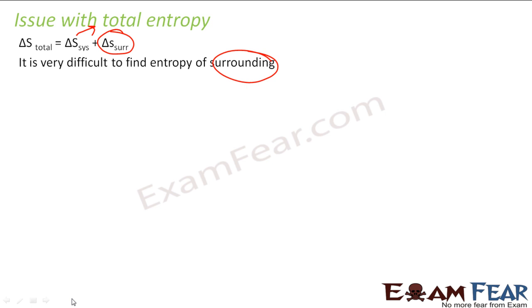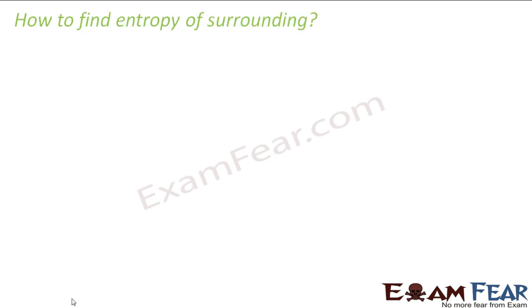Please note, we're talking about total entropy of the system. But finding total entropy is difficult. Why? Because total entropy is nothing but entropy of the system plus entropy of the surrounding, and it is very, very difficult to find entropy of the surrounding.